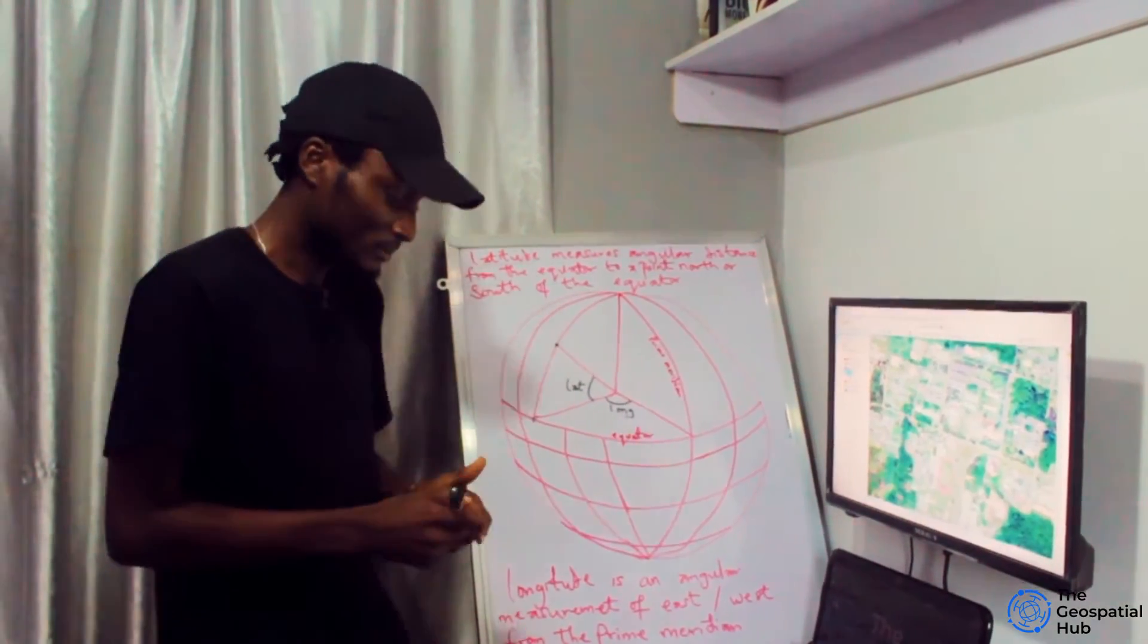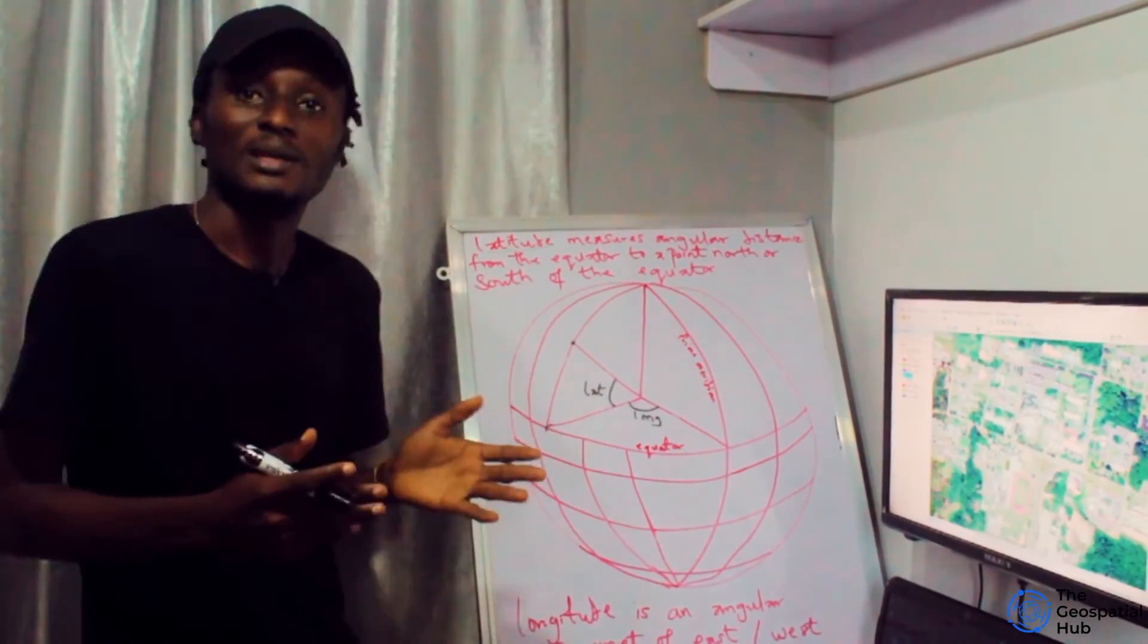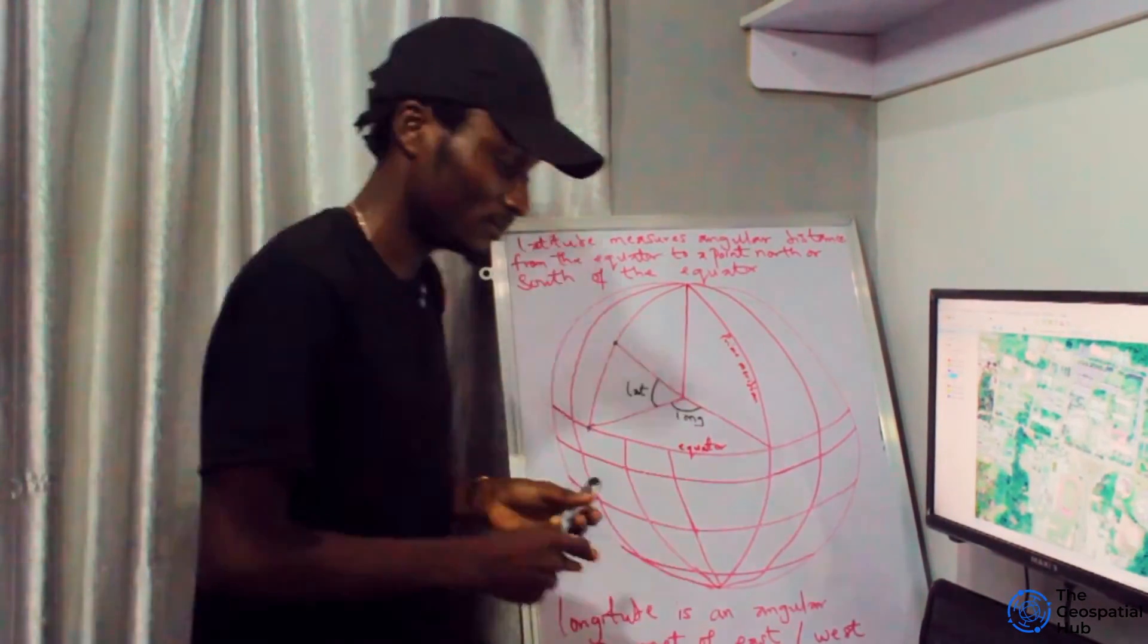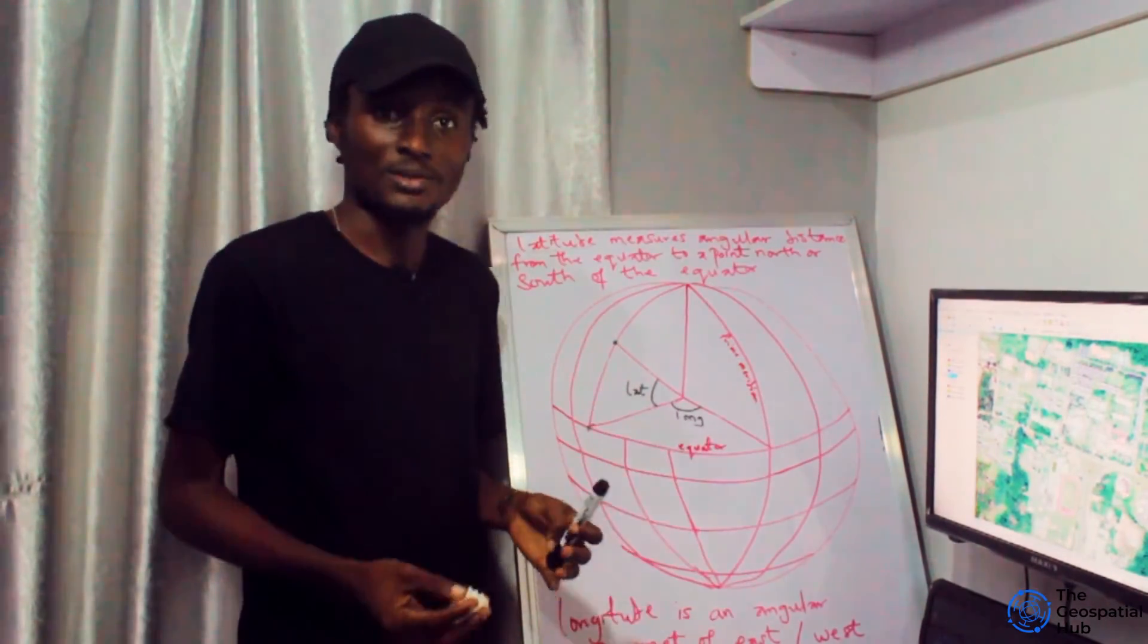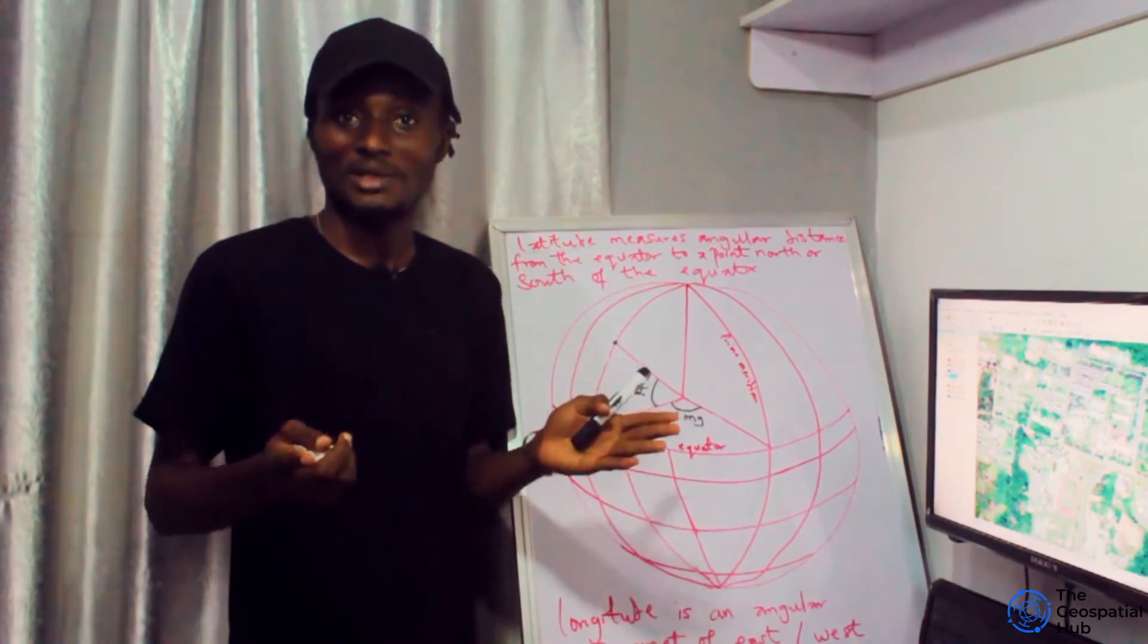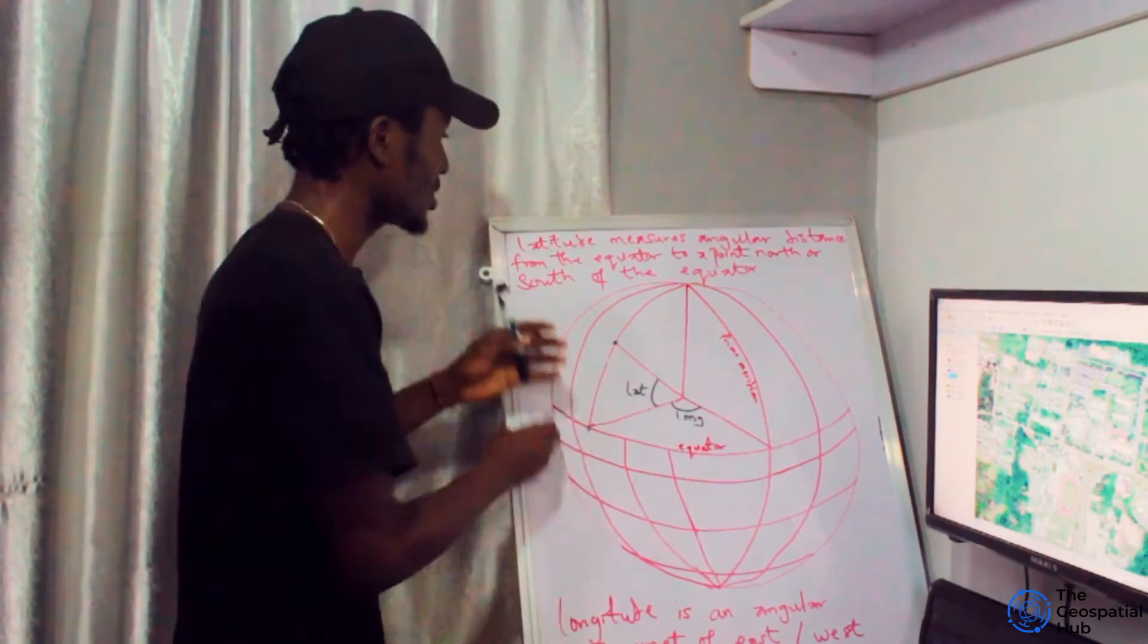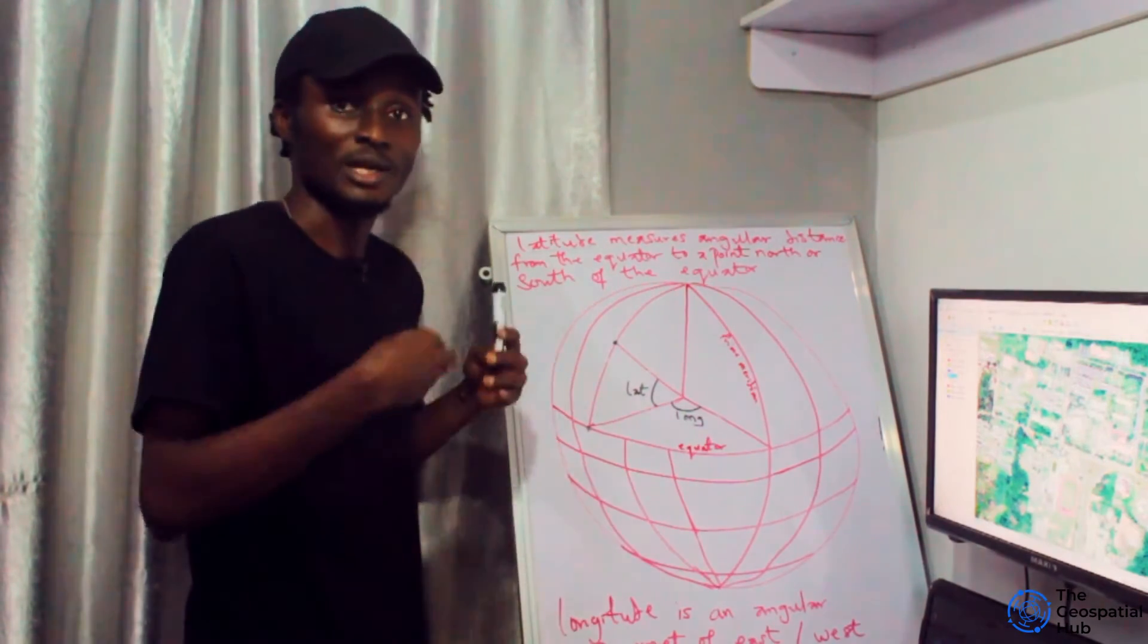Latitude and longitude are not a plane coordinate system - they're a geographic coordinate system. However, latitude and longitude can also be used as a plane coordinate system when you want to produce a flat map. Let me further explain by drawing a plane coordinate system.